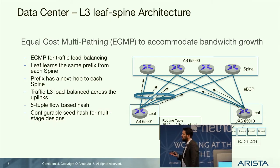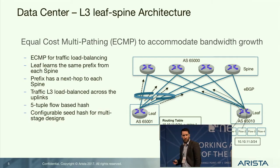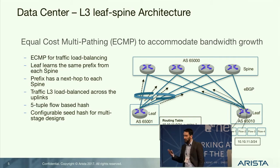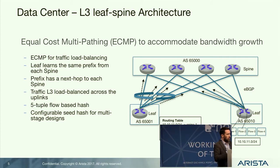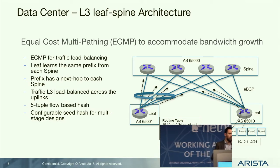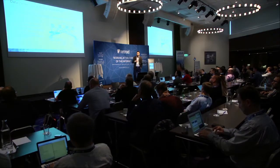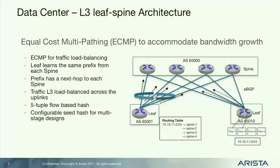To make use of the bandwidth you use ECMP. From the leaf's perspective, it learns all the prefixes and their next hops via each of the spines, giving a four-way ECMP in this design. Classic four-tuple hashing is used across those links to get the full bandwidth.